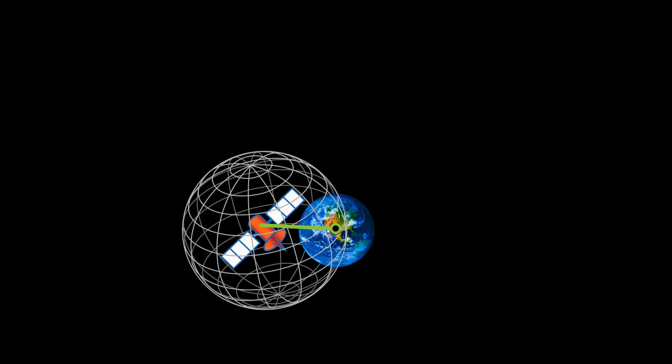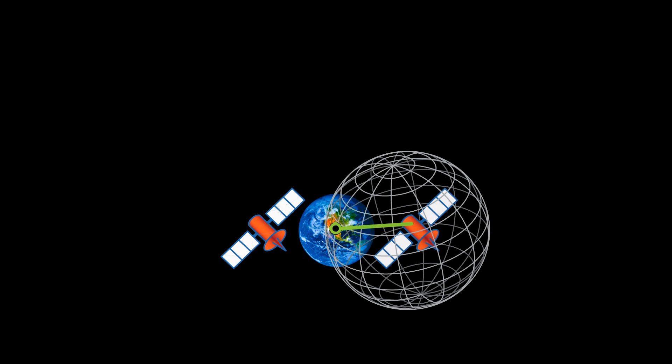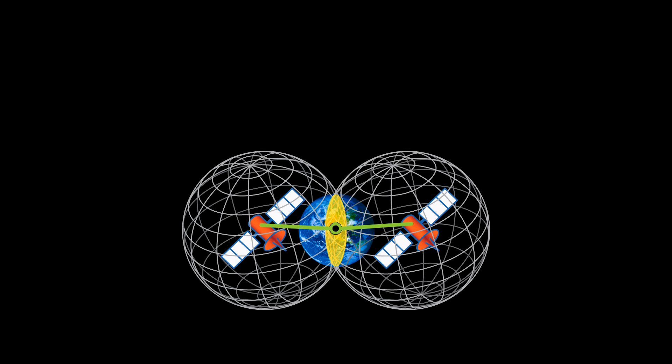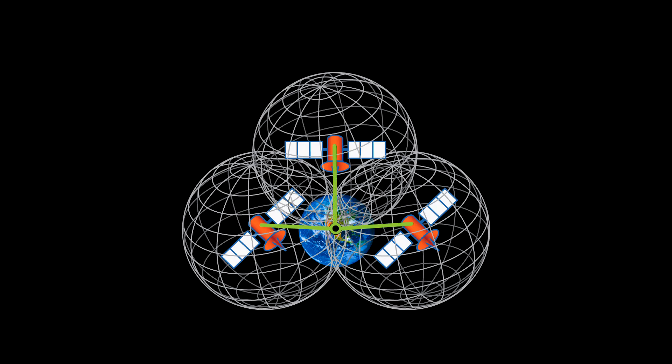With one satellite, the receiver knows that it's located on a sphere around that satellite with a radius equal to the calculated distance. It does the same calculation with the second satellite. The intersection of these two spheres narrows the location to the circumference of a circle. Then with the third satellite, the receiver can reduce the location to a single point.